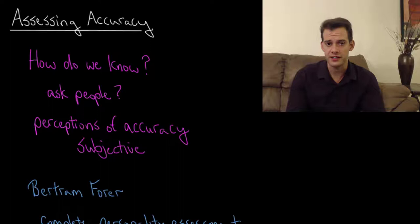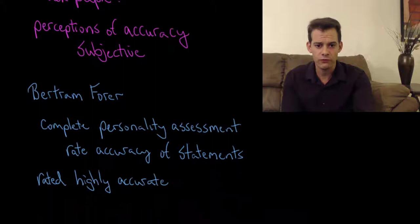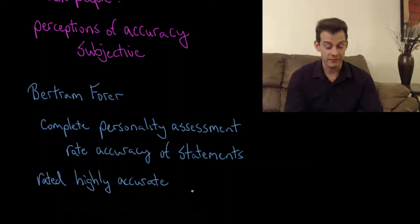So some research on this was conducted by Bertram Forer in the late 1940s. And so what Forer did was he had participants complete a personality assessment and then he gave them feedback from the assessment. He said here's a series of statements that we've found based on your assessment that we think describe you and we want to know how accurate are these statements. And the participants rated these statements as being highly accurate. They said these really do capture my personality. In other words, you have an accurate test.